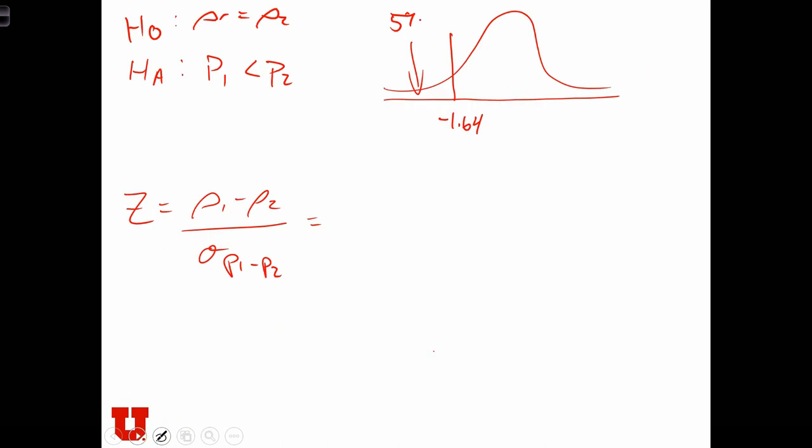15 over 40, which is 0.375, 40 over 55, 0.73, or 0.727. And we said that the standard error was 0.1.